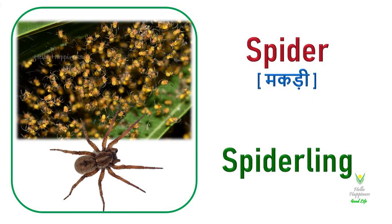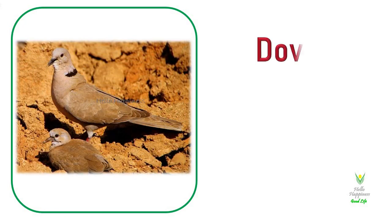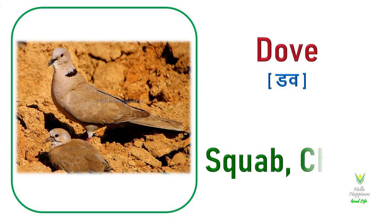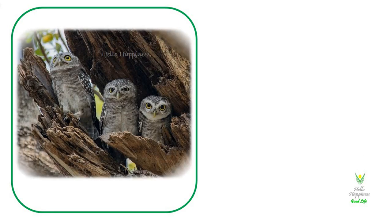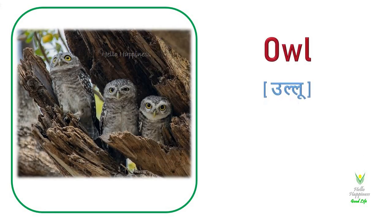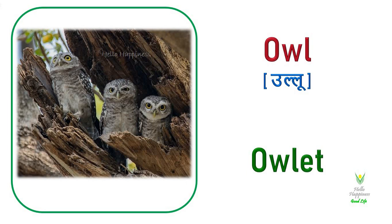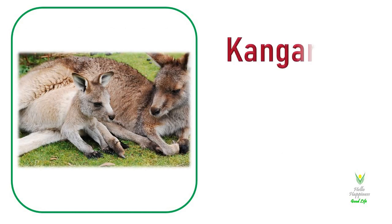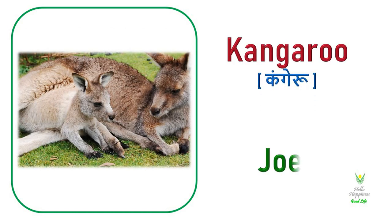Spider. Spider's young one is called a Spiderling. Dove. Dove's young one is called a Squab or Chick. Owl. Owl's young one is called an Owlet. Kangaroo. Kangaroo's young one is called a Joey.